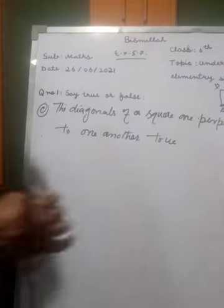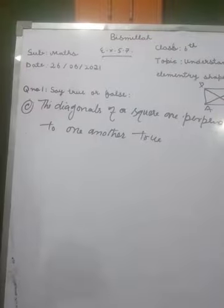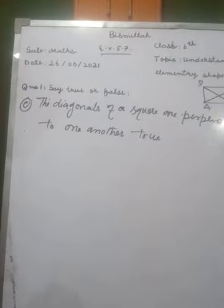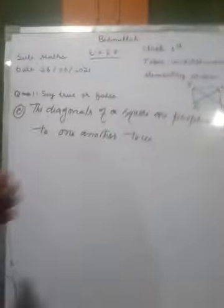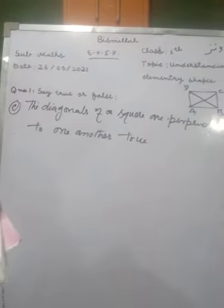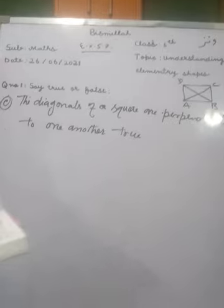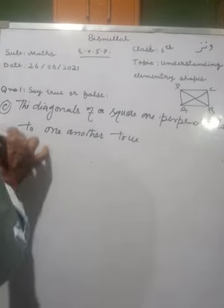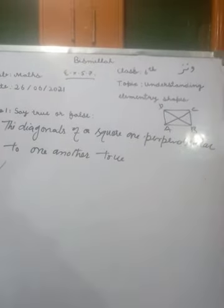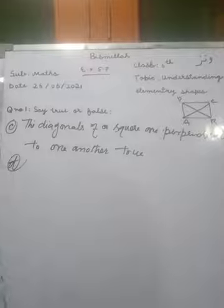A C is called a diagonal. B D is called a diagonal. M N is called a diagonal.